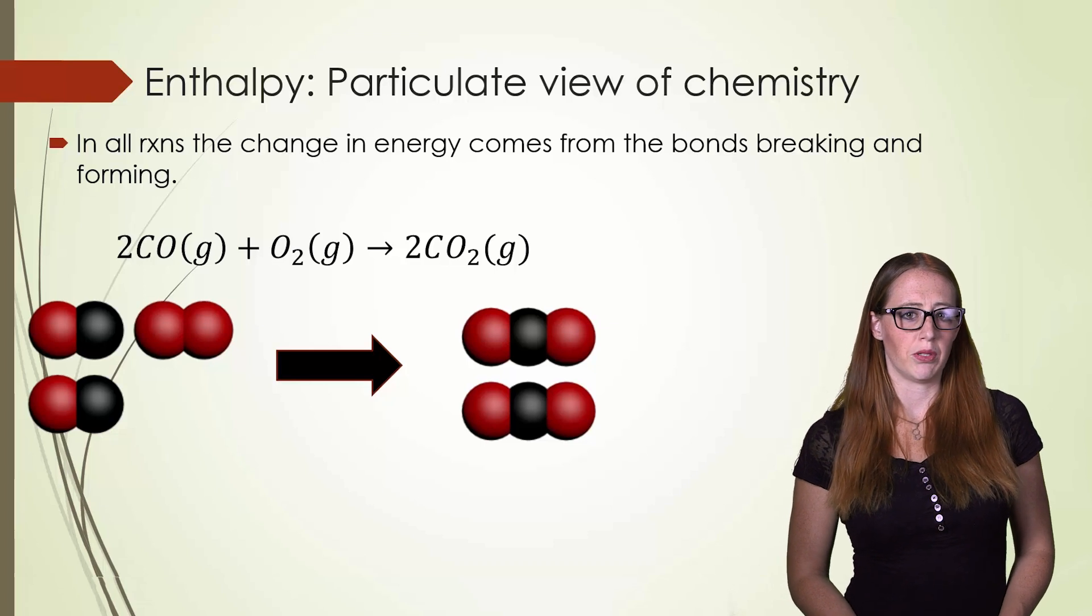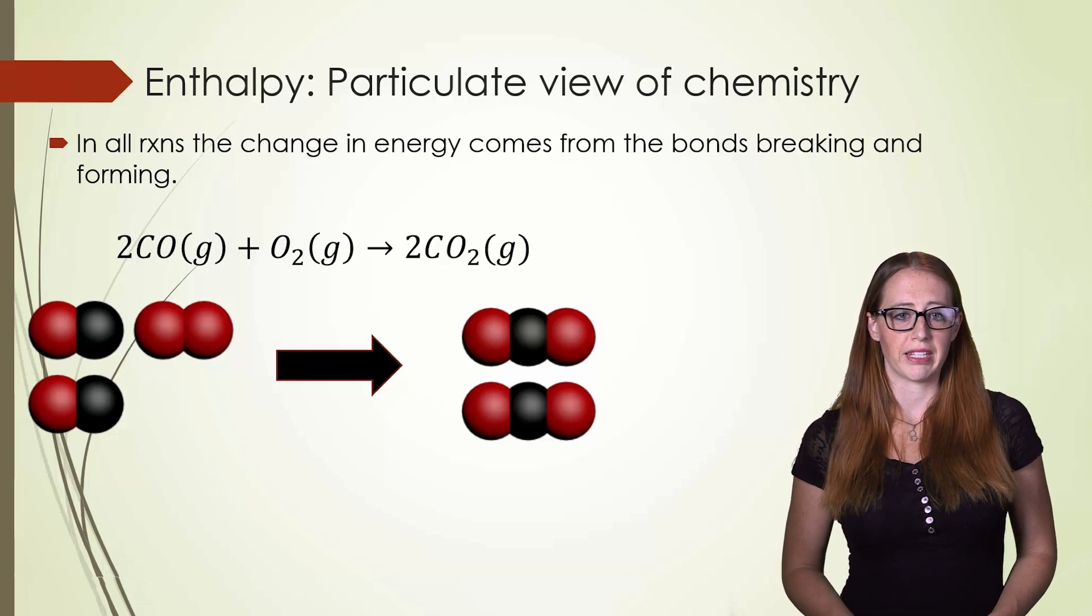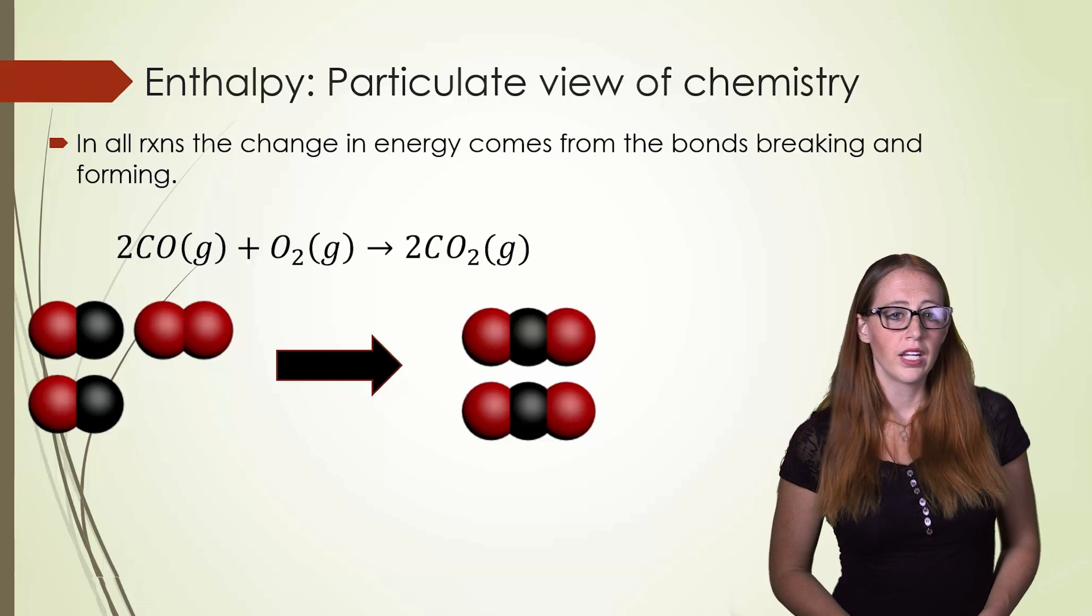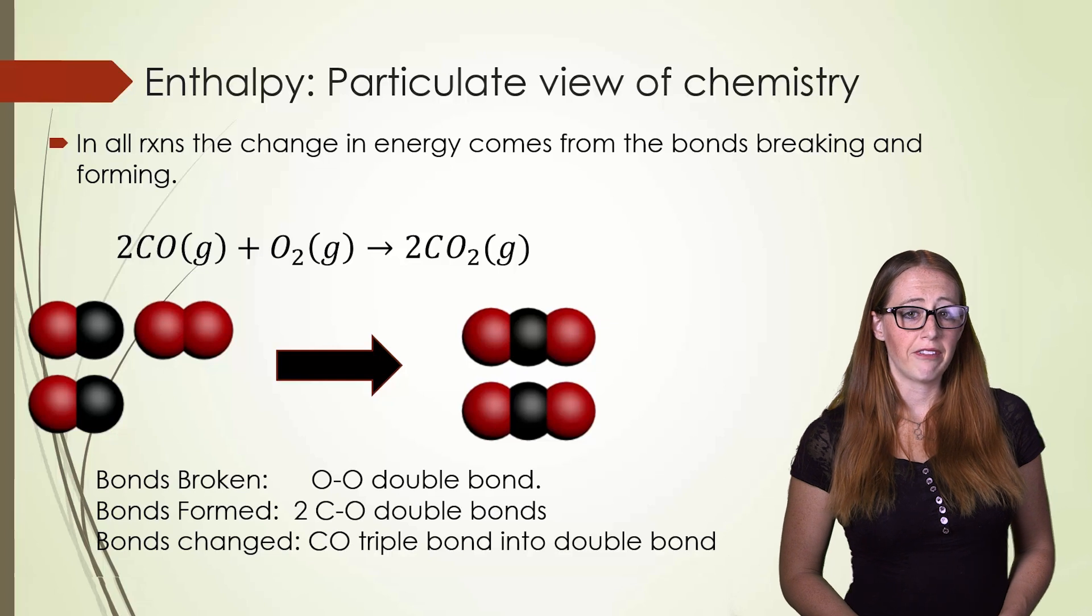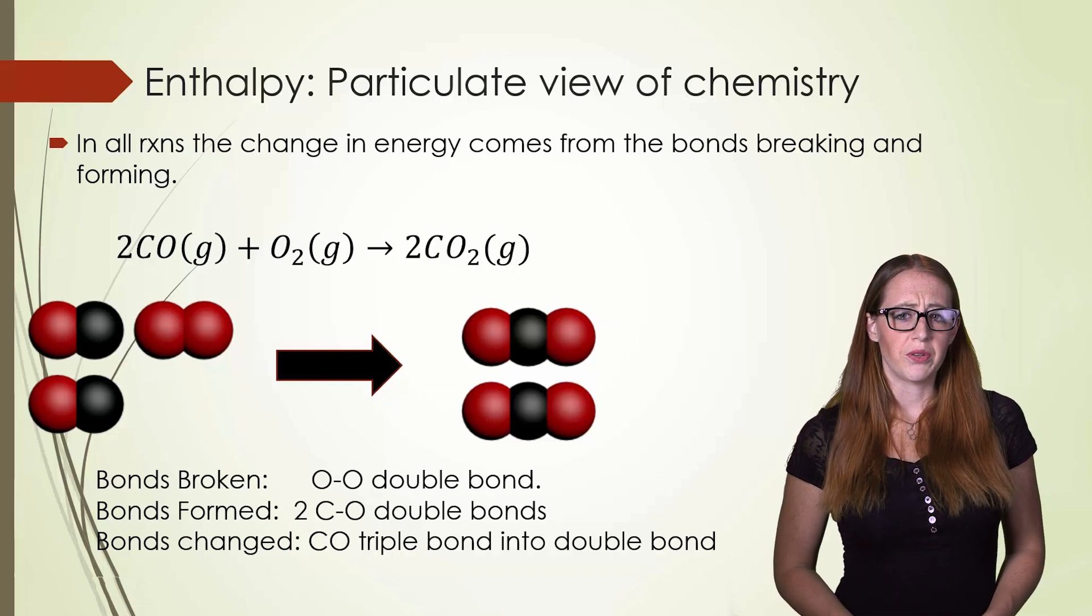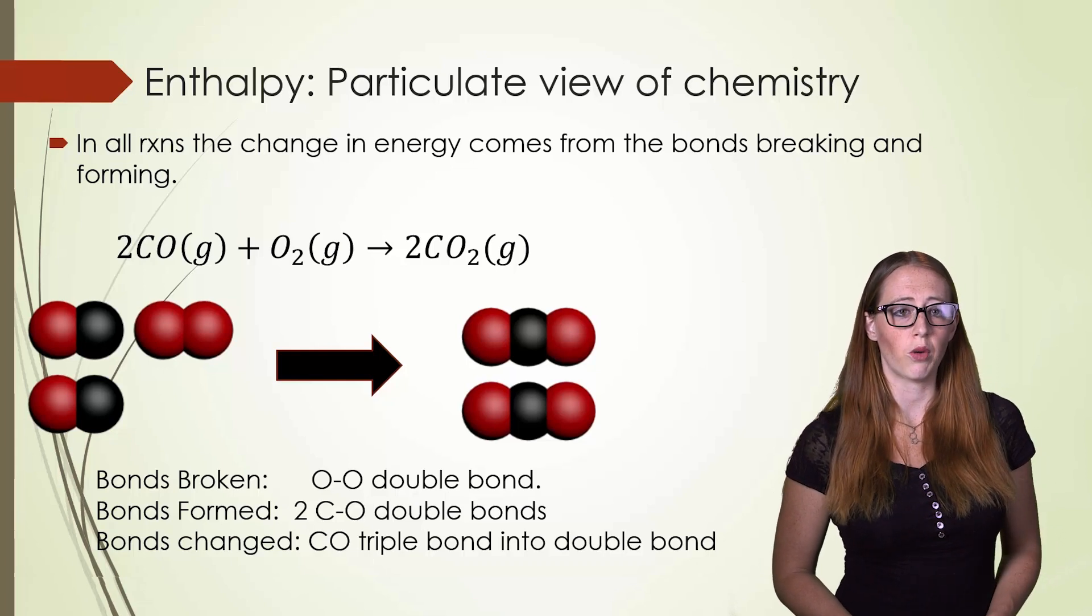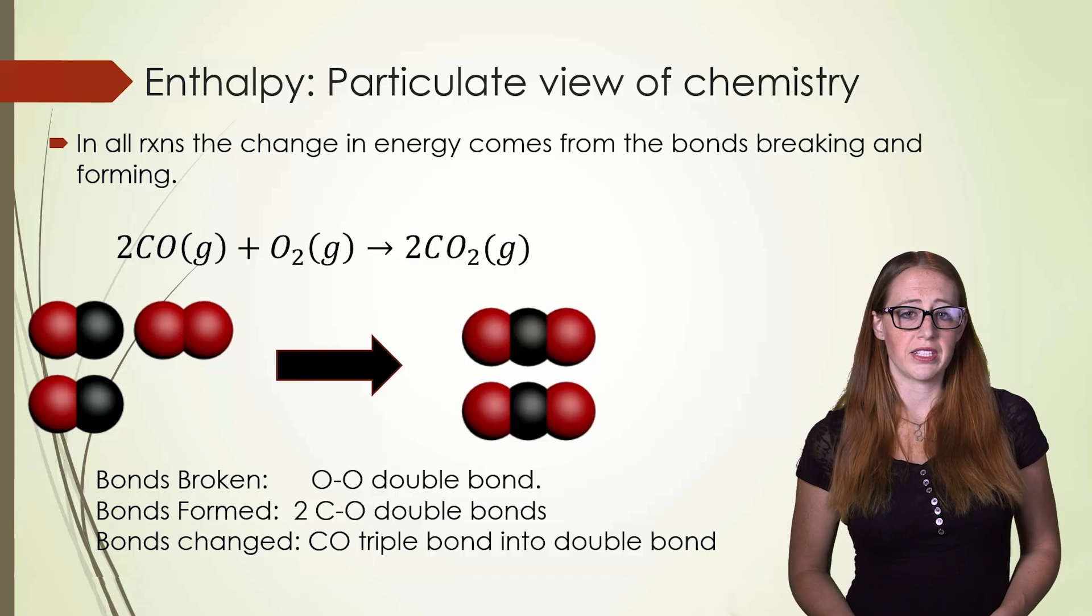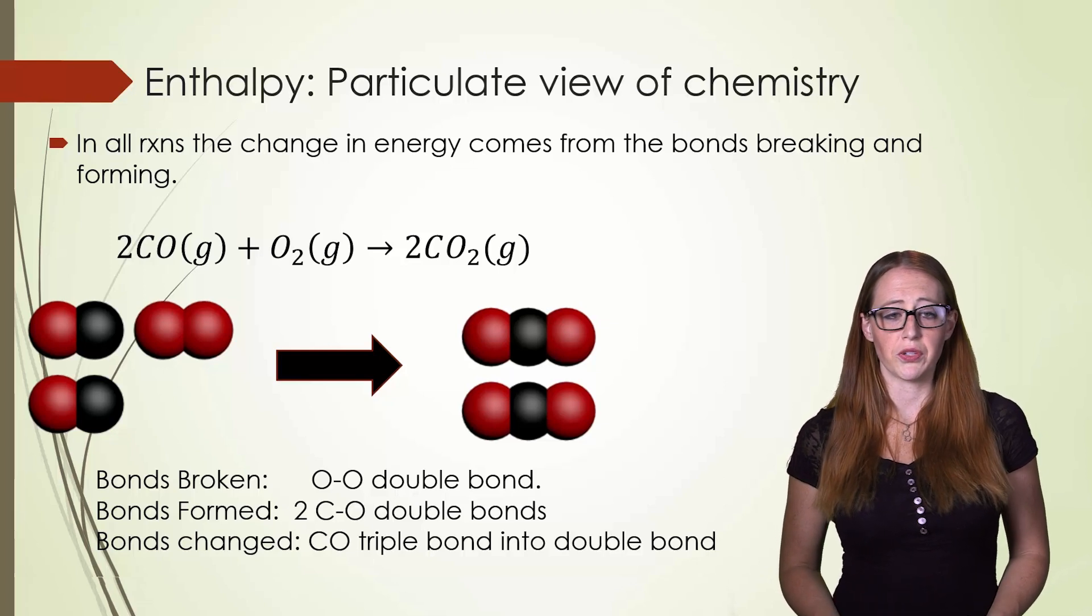Before we get into the actual nuts and bolts of the calculations, let's just look at what bonds are being broken and what bonds are being formed. Here we are breaking an O-O double bond and forming two C-O double bonds. Notice though that it isn't quite as simple as saying just these bonds are broken and formed, since we also must delve into the situation of the triple bond in the CO being changed into a double bond.